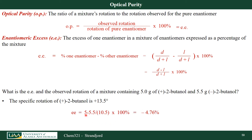Plugging in numbers: 5 minus 5.5 divided by 10.5 total gives an enantiomeric excess of minus 4.76%. The observed rotation equals the specific rotation of one enantiomer multiplied by the enantiomeric excess, giving minus 0.643 degrees as the observed rotation of this mixture.